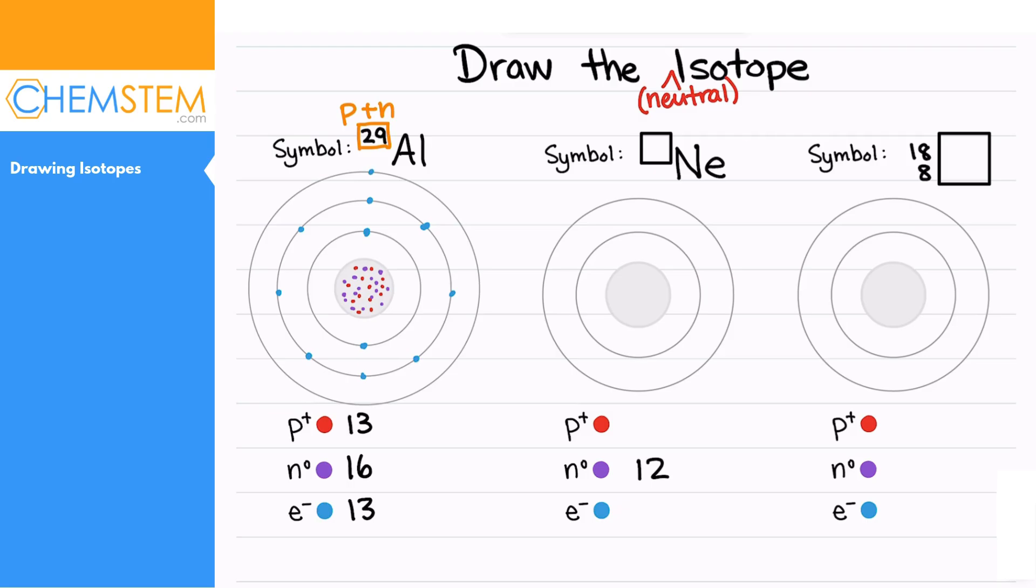I'm going to highlight these three outer electrons, and as a preview for when you talk about ions, those three outside electrons are called valence electrons. They have the highest amount of energy.